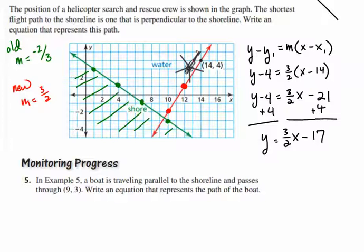So, 9, 3, we'll draw this in purple, would be roughly right about here. So, the line is moving parallel to the shore, so it's going to move something like that. We want to write an equation that represents the path of the boat. Well, no problem. We know that it's going to be parallel, so the slope will be the same.